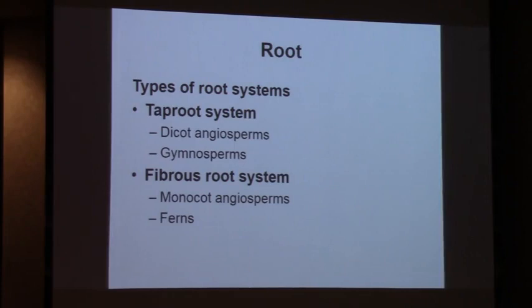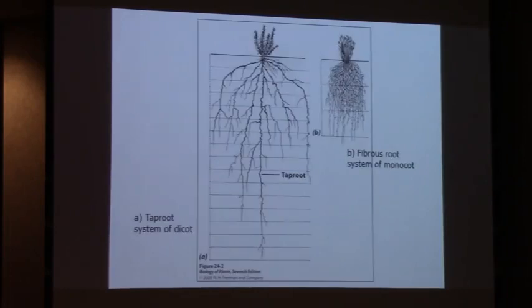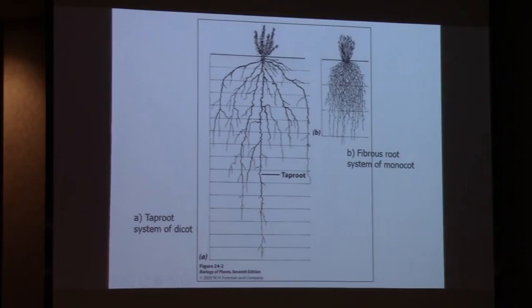Tap root systems versus fibrous root systems. Dicot angiosperms and gymnosperms typically have tap root systems, and monocot angiosperms and ferns have fibrous root systems. With a tap root system you've got this main central line of growth - the taproot - with branch roots coming off of it. And on the right you've got a mass of roots, relatively small, roughly the same size - that's the fibrous root system.